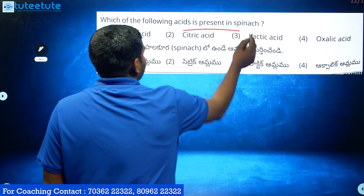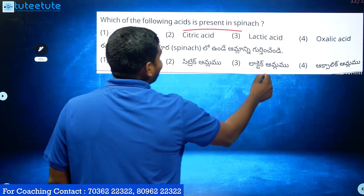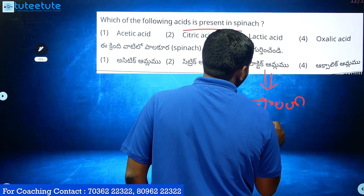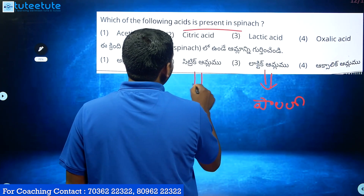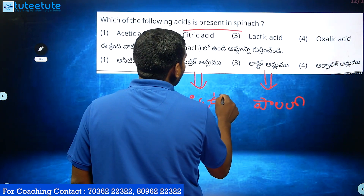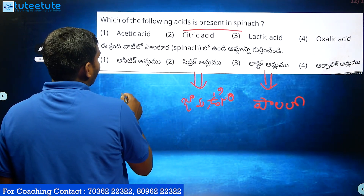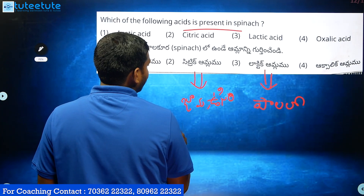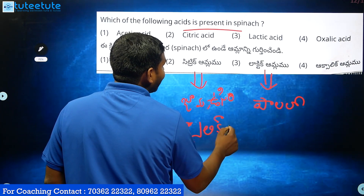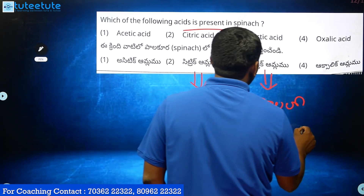Which acid is present in tomatoes? Lactic Acid is present in milk. Citric Acid is Vitamin C acid. Oxalic Acid is present in tomatoes.